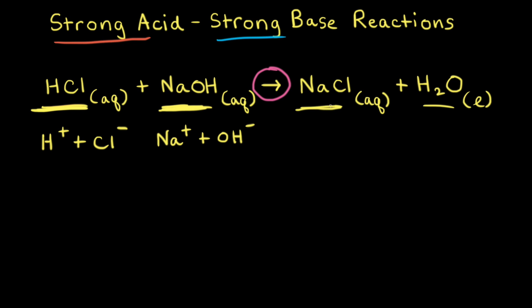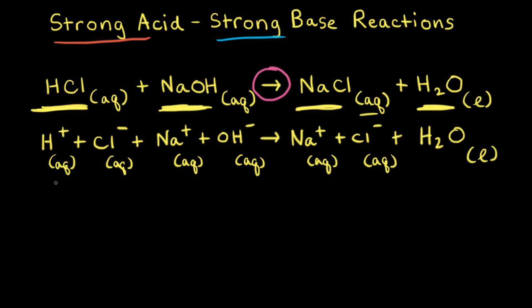For our product, sodium chloride is a soluble salt and therefore forms an aqueous solution. So in solution we would have sodium cations, Na⁺, and chloride anions, Cl⁻. Since water ionizes only to a very small extent, we don't write it as ions — we simply write H₂O. Adding in aqueous subscripts, liquid for water, plus signs, and the reaction arrow, this is called the overall ionic equation, or complete ionic equation, for our strong acid-strong base reaction.